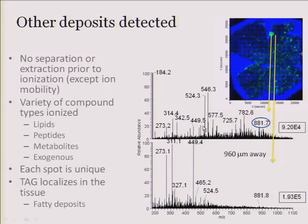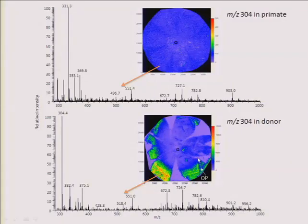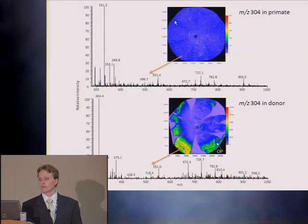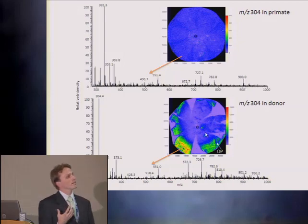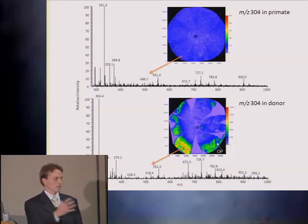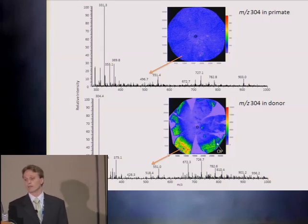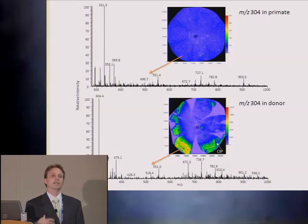We can use the same sample to look at other aspects of distribution in the tissue. When looking at a primate sample we have a clean mass spectrum showing what we normally see in different tissues. When looking at a donor sample — which we often need because donors help us get larger numbers — we don't necessarily know a lot about the sample beforehand. In this first sample, I detected compounds that were not present in our primate samples.